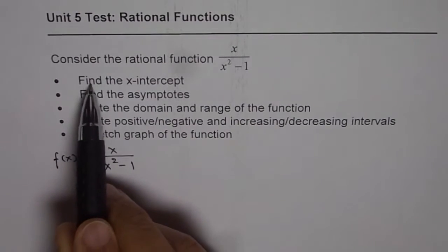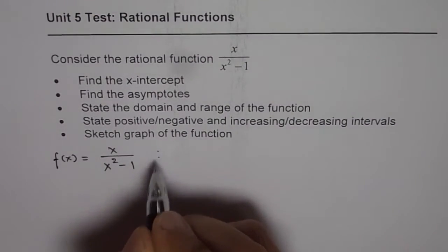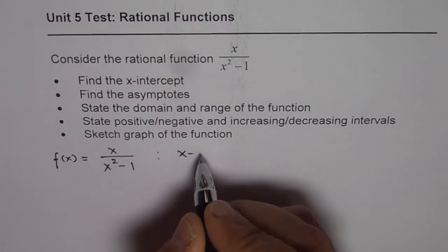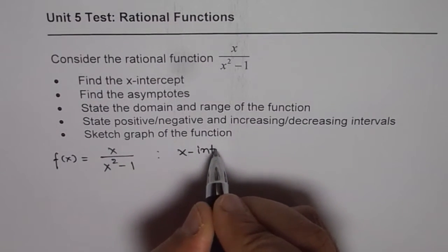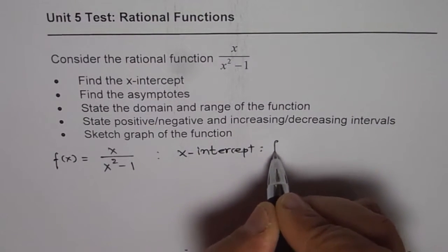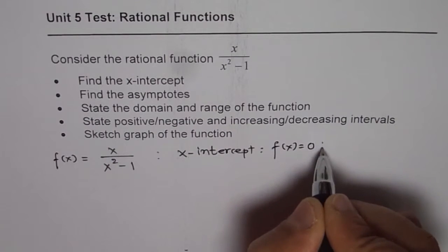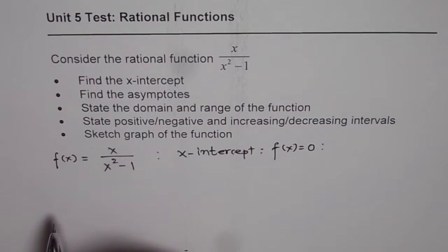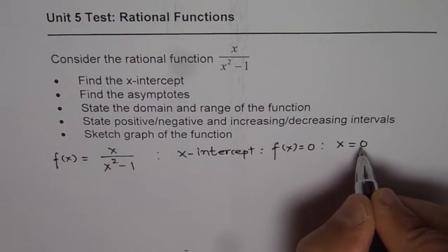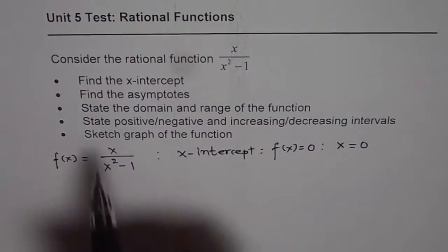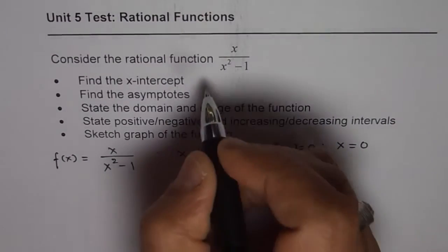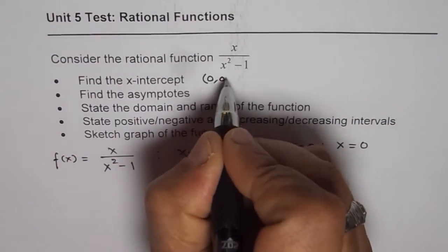When we say find the x-intercept, it means the value of the function is 0. So x-intercept means f of x equals 0. That will be 0 if the numerator is 0. So we equate x to 0, and that is our solution. The x-intercept is at the origin itself, so we write the answer as (0, 0).